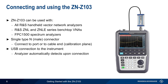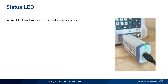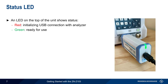Using the ZN-Z103 is very easy. Simply follow the instrument-specific instructions or menu prompts to start the calibration process. This process then runs without additional user input or intervention, and the complete calibration process normally requires less than 10 seconds. The status of the ZN-Z103 is reported by means of a status LED on the top of the unit. The color of this LED indicates the unit's state. The LED will be red while the unit is initializing its USB connection with the analyzer, and green when the unit is ready for use.